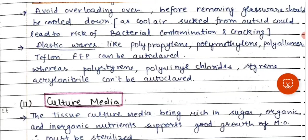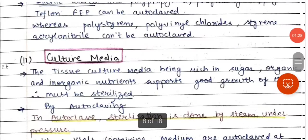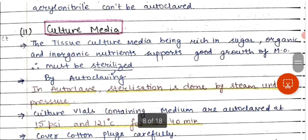Polystyrene, polyvinyl chloride, and styrene acrylonitrile cannot be autoclaved. So some plastics can be autoclaved and some cannot. Next is the culture media sterilization.